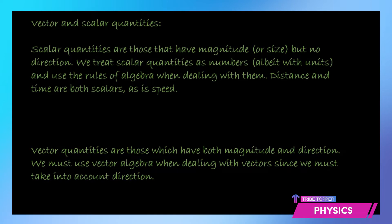Scalar quantities are those that have magnitude alone, or just a size. That means they have a numerical value but no direction. So for example, distance, time, and speed are all scalar quantities. They do not have any direction — they are just measured and we give them a numerical value along with a unit, but no direction.